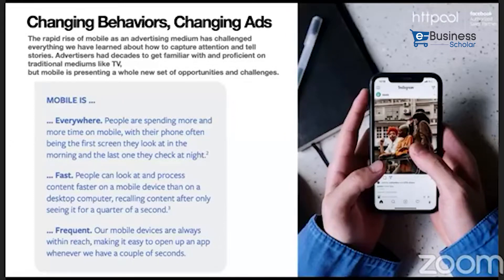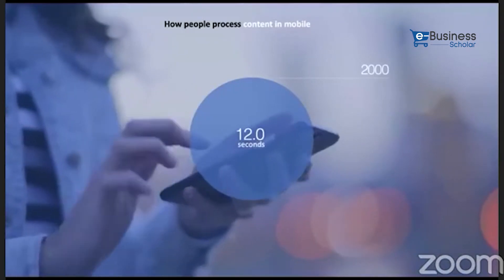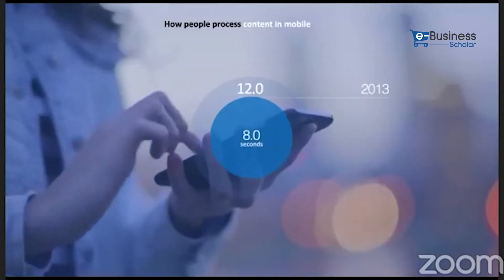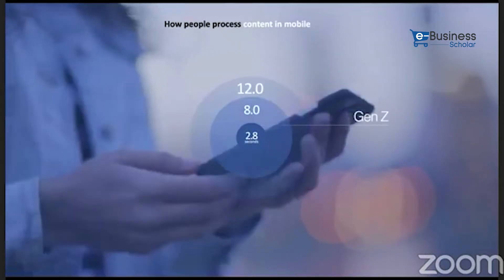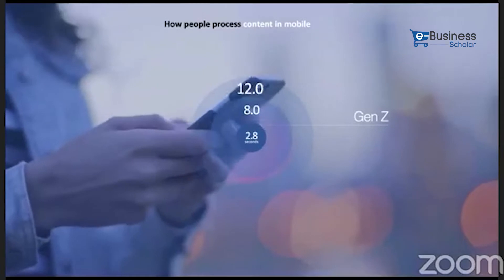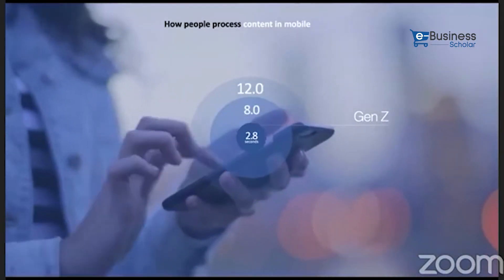Mobile is fast — people can look at and process content faster on a mobile device than a desktop computer, recalling content after only seeing it for a quarter of a second. Mobile is also frequent, with devices always within reach making it easy to open an app whenever we have a couple of seconds. Back in 2000, consumers spent an average of 12 seconds on content. By 2013, that dropped to 8 seconds. Now, living in Generation Z, we invest only 2.8 seconds on average to consume content, because technology, internet, devices, and behavior have all changed.